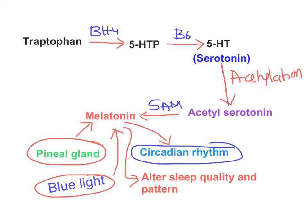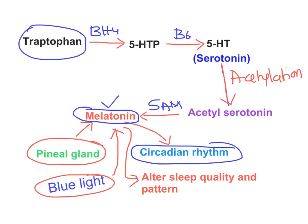Any food containing a high concentration of tryptophan will lead to more melatonin production in the pineal gland. That is why consumption of milk, turkey, or any food high in tryptophan tends to make a person drowsy or sleepy — partly due to the increased synthesis of melatonin. This covers how tryptophan is converted to melatonin, the function of melatonin, the effect of blue light on melatonin, and why high-tryptophan foods make us drowsy.